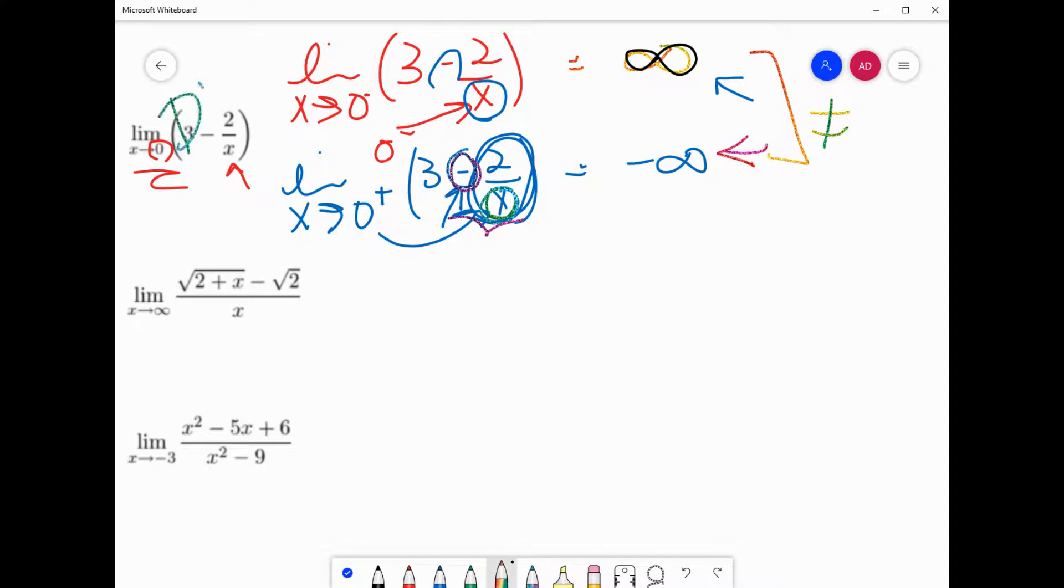Well, since these two don't match, guess what? That's a DNE, right? There is no limit as x goes to zero of this function. Okay, let's look at this next one.